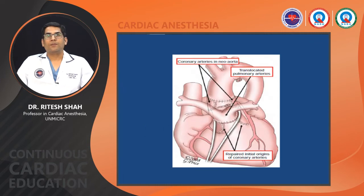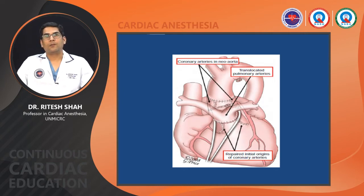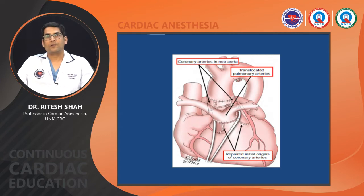You can see the figure of the arterial switch operation, in which the pulmonary artery is transferred anteriorly and the aorta is transferred posteriorly after performing the Lecompte maneuver. The coronary buttons are also visible in the figure.